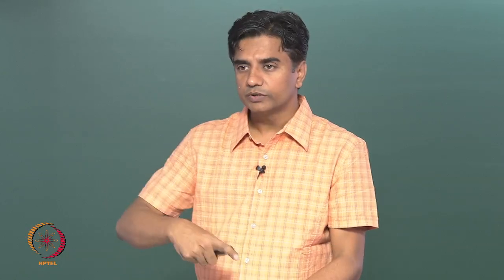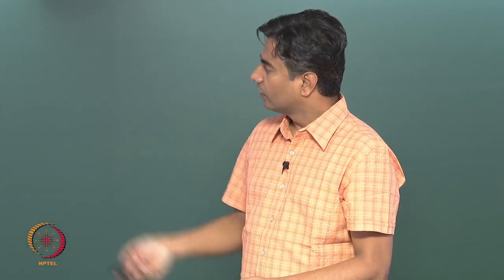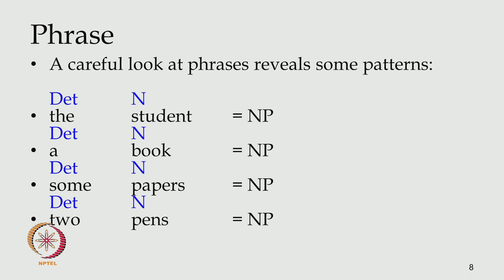Why do we call it a noun phrase? Remember 'the fat monkey' — what's the most important part of that phrase? Monkey. The word that is the most important part will head the whole phrase, because the rest of the components are related around it. 'The' has nothing to do with 'fat,' 'fat' has nothing to do with 'the,' but both have something to do with 'monkey.' So it is the head of the noun phrase, and therefore the phrase is a noun phrase.